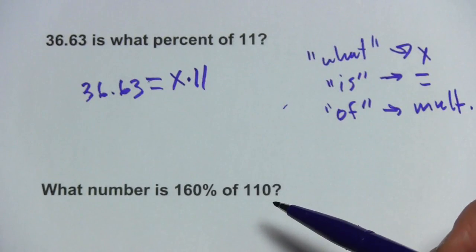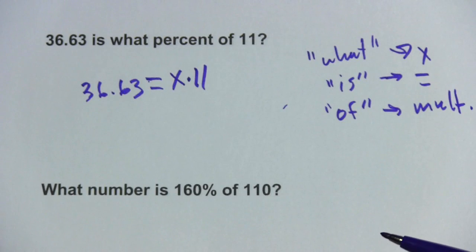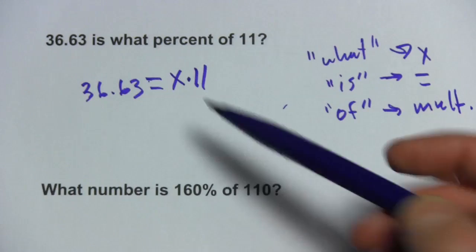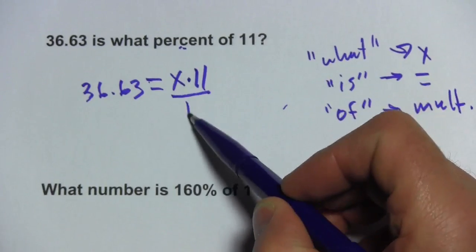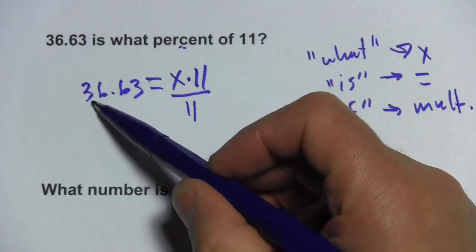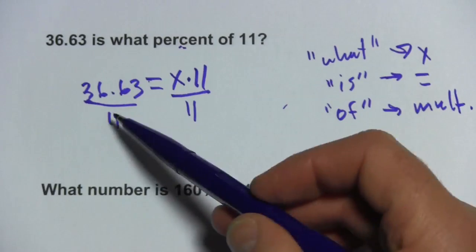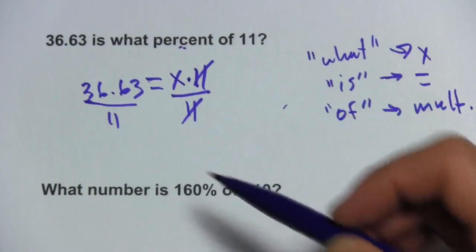So there is our formula. All we need to do is solve this for x and then what we'll get is a decimal and we'll need to convert it finally to a percent. So solving for x first, we just need to divide by 11 because x is multiplied by 11 there and we want to undo that. We do it to both sides, of course, because this is algebra.